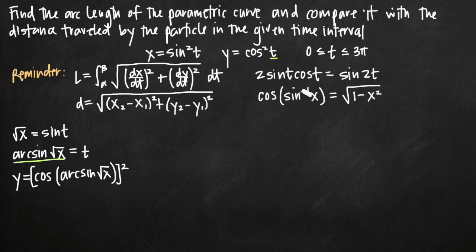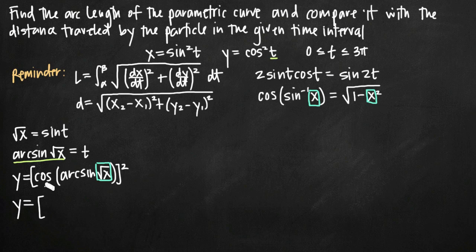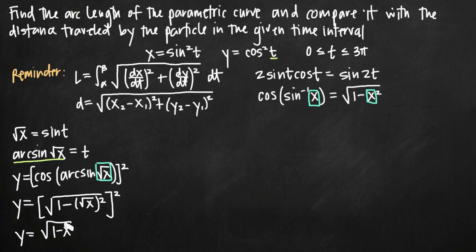Using the formula for cosine of arcsine, we can transform cosine of arcsine of u into the square root of 1 minus u squared. Our value inside the arcsine is the square root of x, so we substitute to get y equals the square root of 1 minus the square root of x squared, all squared. Simplifying: squaring the square root of x gives x, so y equals the square root of 1 minus x, squared. The square root and the squared exponent cancel, leaving us with y equals 1 minus x.